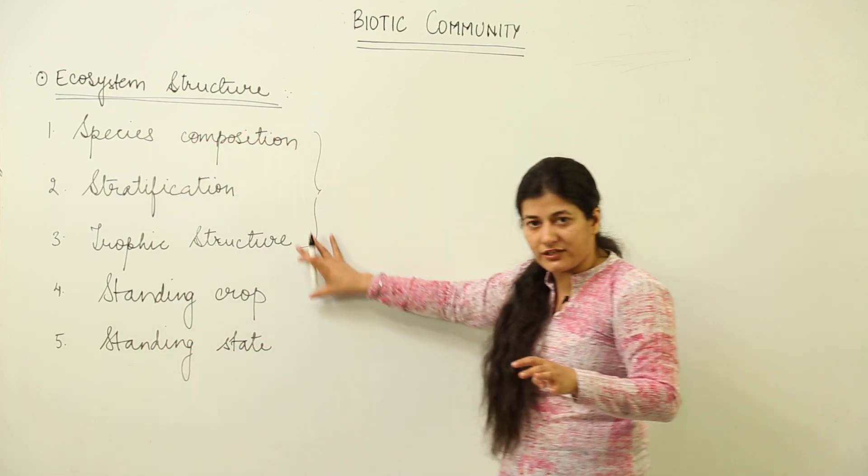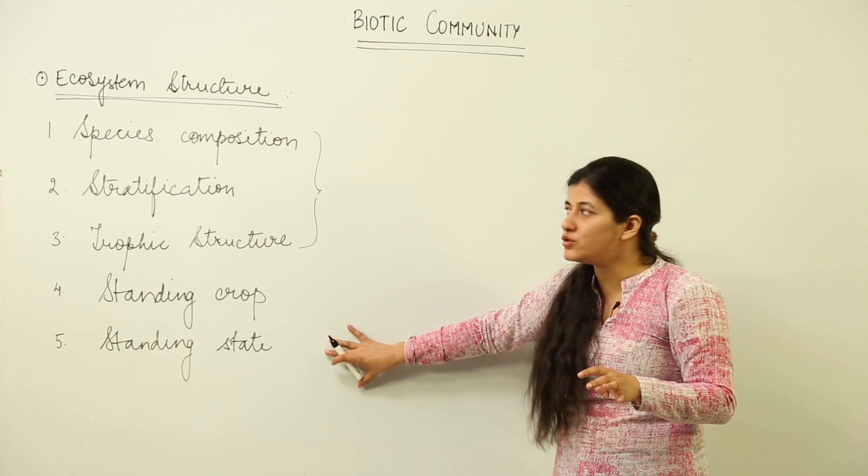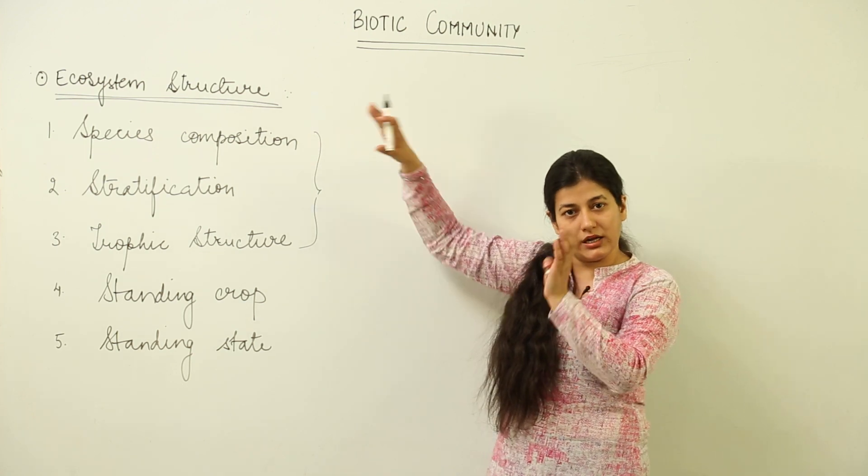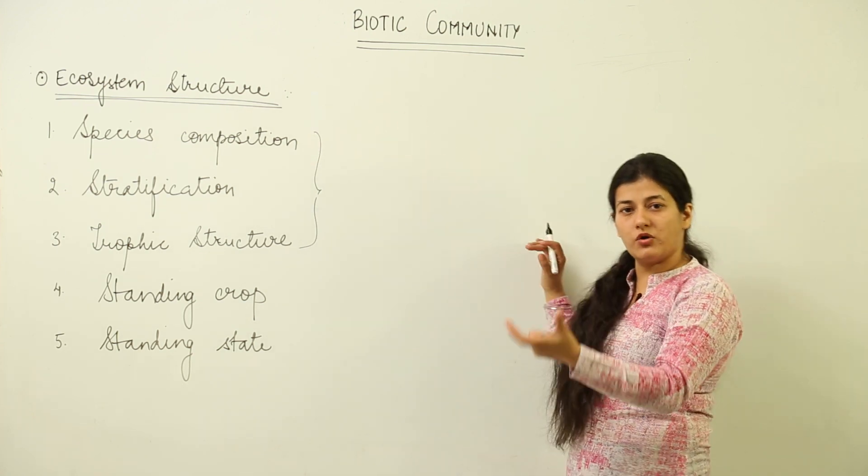When we study these five things — species composition, stratification, trophic structure, standing crop, and standing state — we come to know the structure of that ecosystem. This allows us to identify and conclude whether it is a pond ecosystem, a grassland ecosystem, or any other ecosystem prevalent in the biosphere.